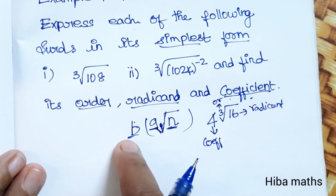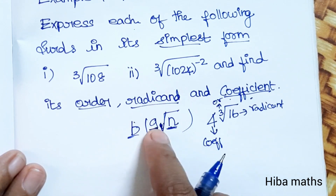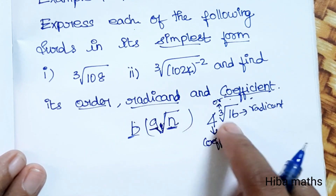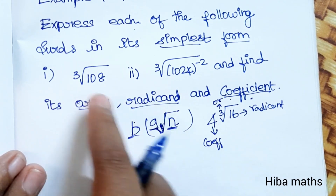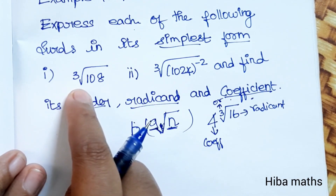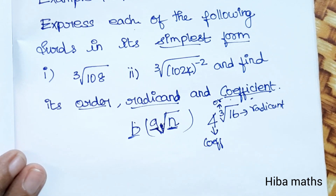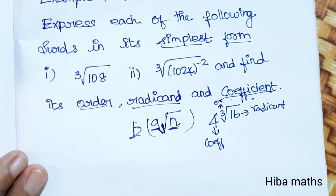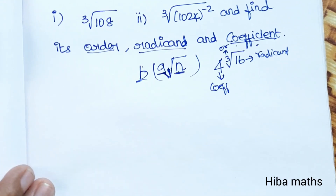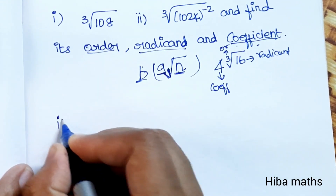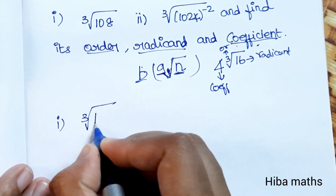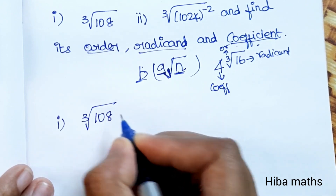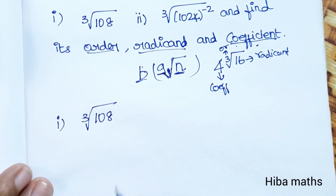If you understand that, the general format has the coefficient, order, and radicant. The first question is to express in simplest form. First subdivision: cubic root of 108.